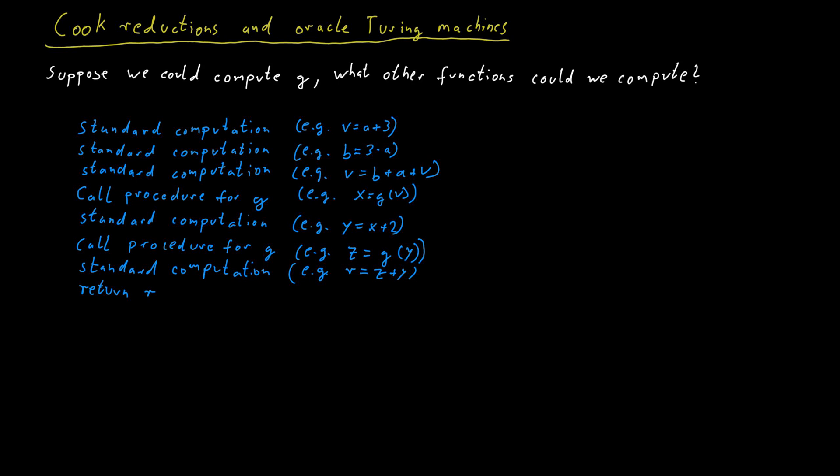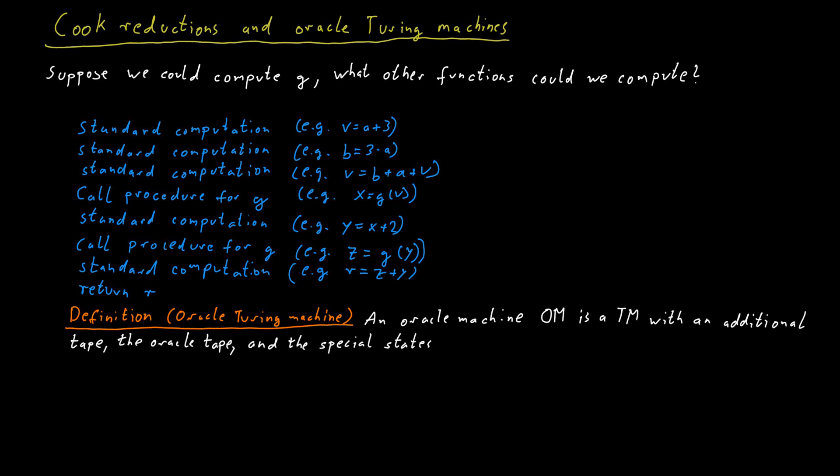Now we want to formalize this idea using Turing machines. And for that, we use a notion of a so-called Oracle Turing machine. Sometimes it's also just called an Oracle machine. So an Oracle machine is a Turing machine with a special additional tape called the Oracle tape. And the machine has additional special states, let's call them qask, q1, and q0.